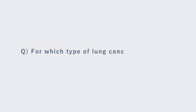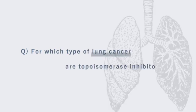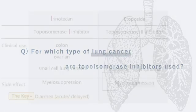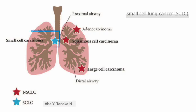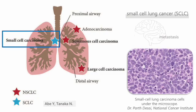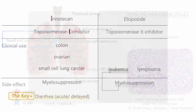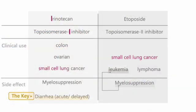For which type of lung cancer are topoisomerase inhibitors used? Both topoisomerase 1 and 2 inhibitors are used for small cell lung cancer, which is an aggressive disease with distinct biological and clinical features. Etoposide is also used for solid tumors like testicular cancer.